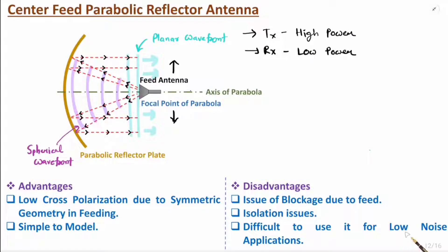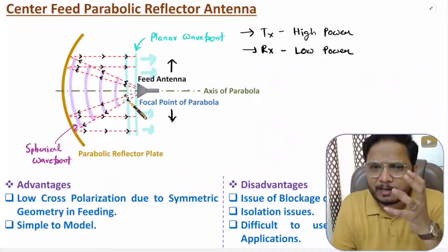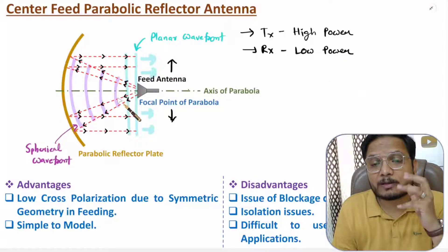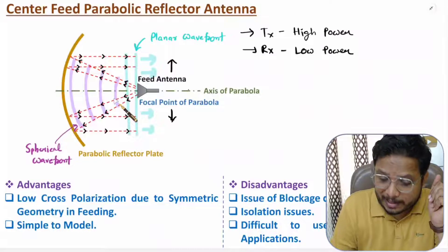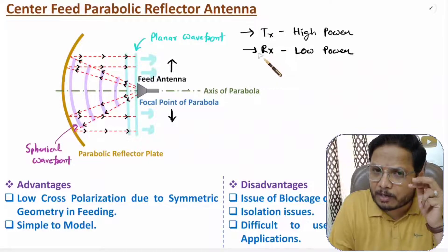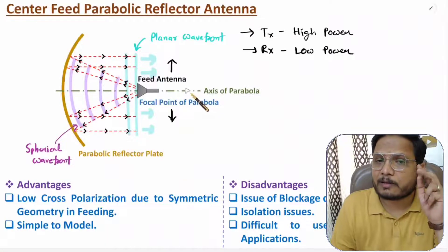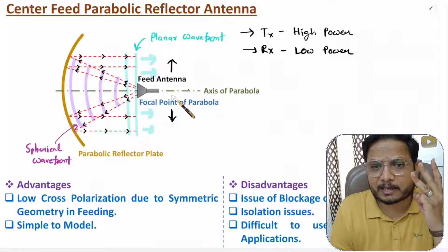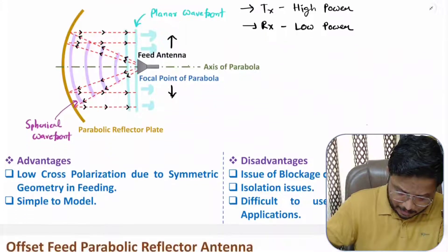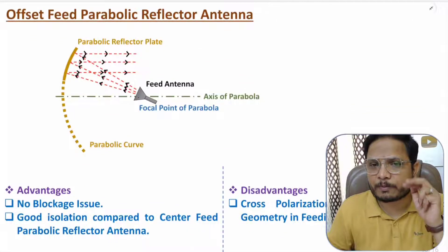A third issue is that this structure cannot be used with low noise applications. Because of the blockage, high power signals are transmitted and received at the same point, causing temperature-related damage. For low noise applications it is essential to isolate transmitter and receiver circuits, which is not possible here due to design symmetry. These three essential disadvantages can be overcome by going for the offset feed parabolic reflector.